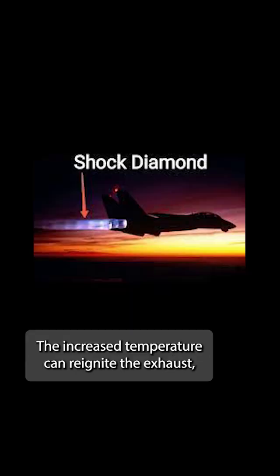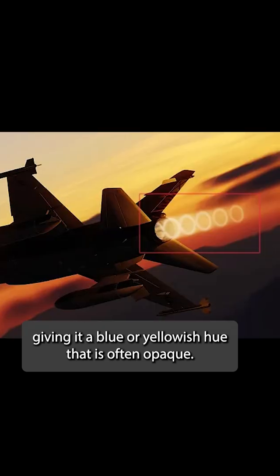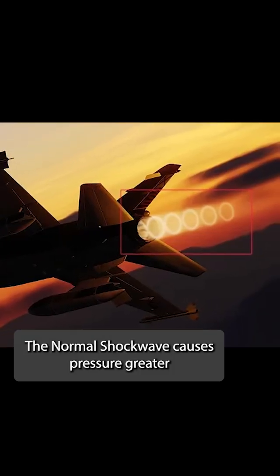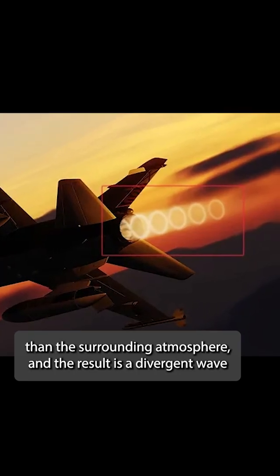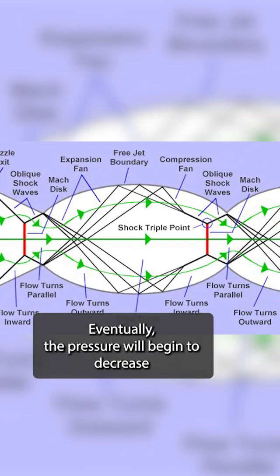The increased temperature can reignite the exhaust, giving it a blue or yellowish hue that is often opaque. The normal shock wave causes pressure greater than the surrounding atmosphere, and the result is a divergent wave that then begins to lose pressure.